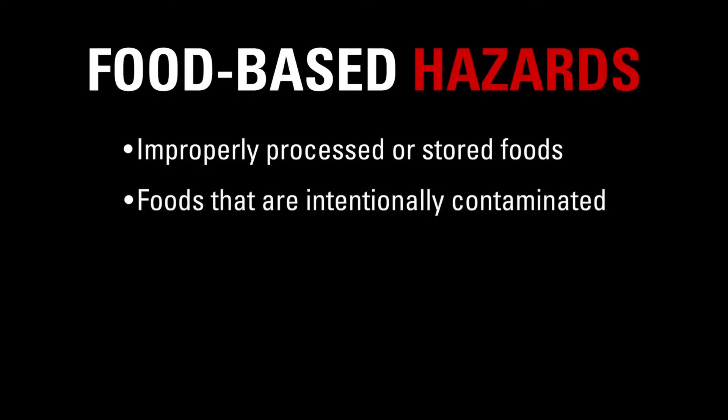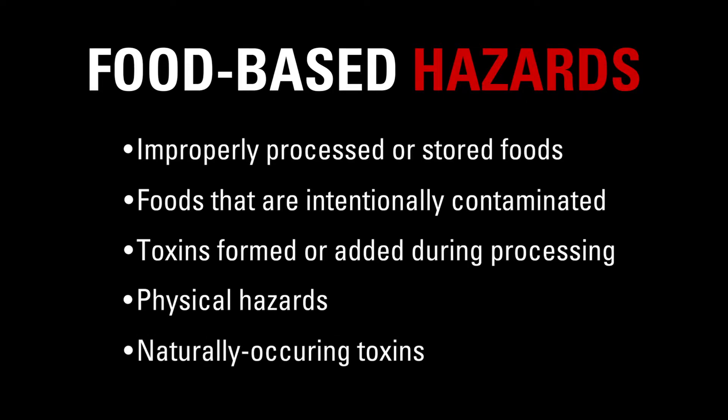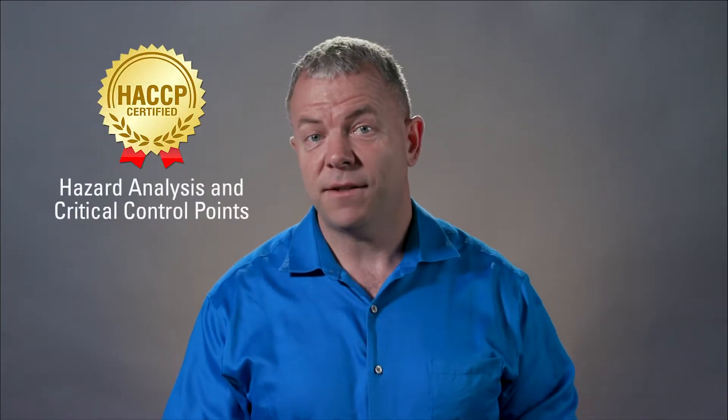Food-based hazards include general categories such as improperly processed or stored foods, foods that are intentionally contaminated, toxins formed or added during processing, physical hazards, and naturally occurring toxins. Raw milk, which relates to improper processing, acrylamide in fried foods, which is a toxin formed during processing, and poisonous mushrooms, which contain naturally occurring toxins, are just a few examples of food-based hazards.